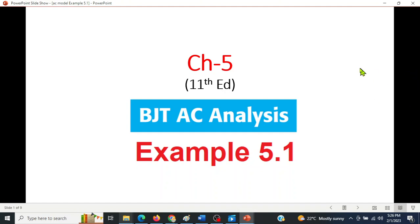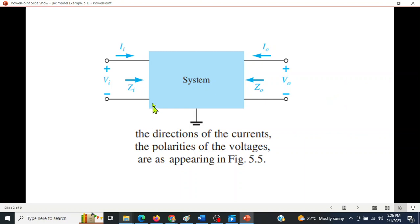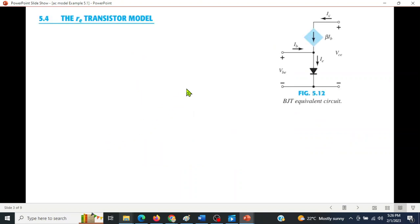This video is from Chapter 5 of Mr. Bolster's book on EDC, topic is BJT AC analysis. Here we'll be discussing Example 5.1. Keep in mind that whenever we're discussing a system, the input current is entering the system, similarly the output current is also entering the system. The input voltage is positive at the top, and similarly the output voltage is positive at the top.